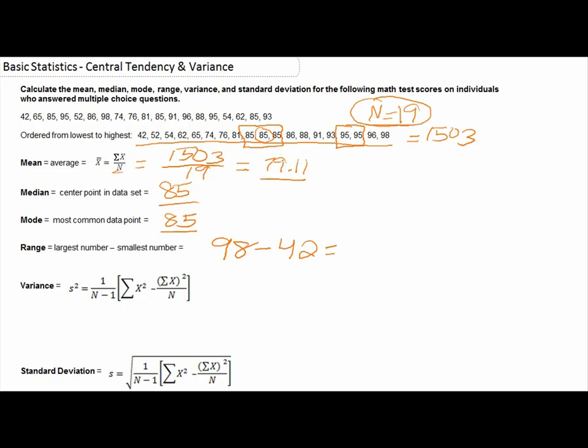Doing this calculation, we can determine 98 minus 42 is 56. So our range in our data set is actually quite large, going from 42 to 98, and it is 56.